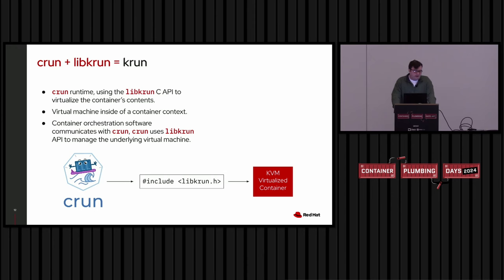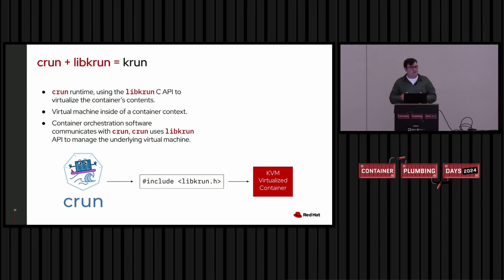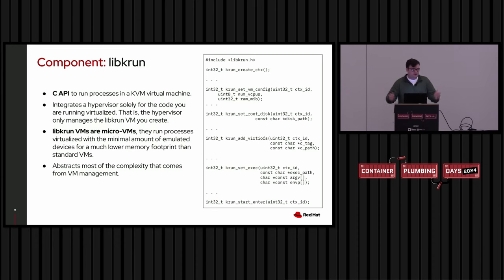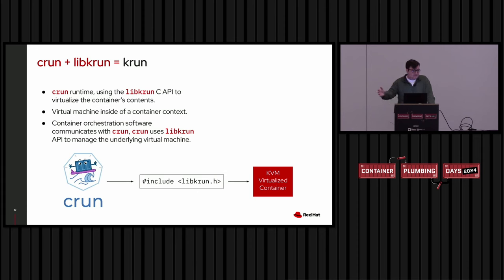KRUN is the CRUN runtime using the LibKRUN C API to virtualize the container's contents — a virtual machine inside a container context. The container orchestration software communicates with CRUN, which in turn uses the LibKRUN API to manage the underlying virtual machine. Through the API you can set VM config (CPUs, RAM), set the root disk, add a VirtIO-FS device, and more. So KRUN is essentially CRUN as a base, calling into the LibKRUN C API to manage a virtual machine.